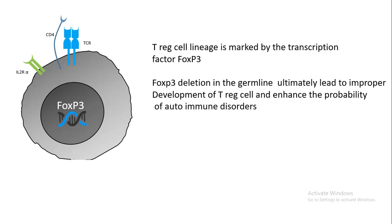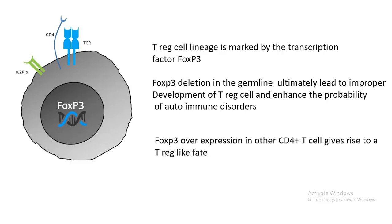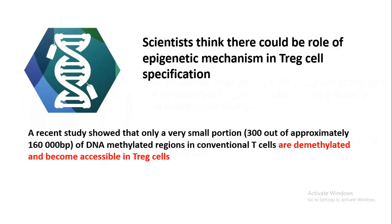FOXP3 deletion in the germline ultimately leads to improper development of T regulatory cells and increases the probability of autoimmune disorders. Conversely, if you overexpress FOXP3 in a CD8 positive T cell, it gives rise to T regulatory cell-like character, including expression of IL-10. Scientists also think that apart from genetic predisposition, epigenetic mechanisms can lead to T regulatory cell specification. A recent study showed that a small portion of DNA present in all T cells, which is generally methylated, is found to be demethylated in T regulatory cells, making it accessible to many transcription factors — so the transcriptional programs in T regulatory cells differ significantly from normal CD4 positive T cells.